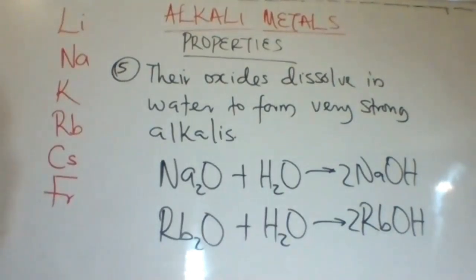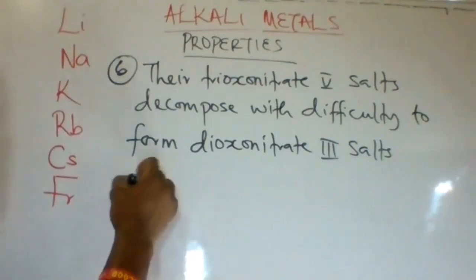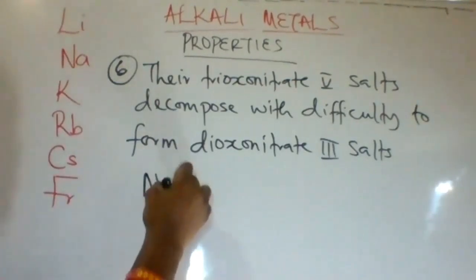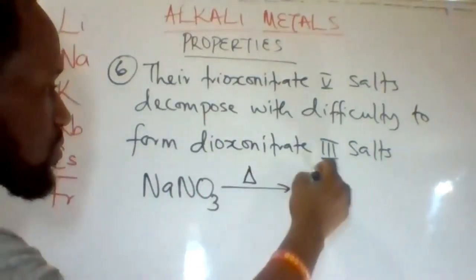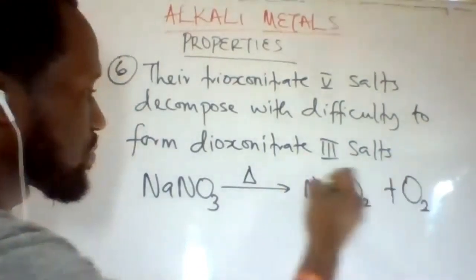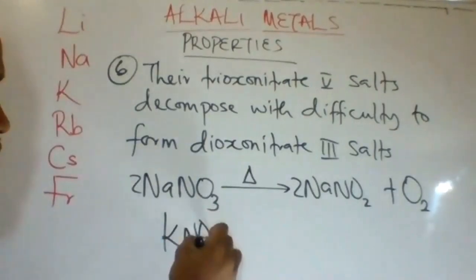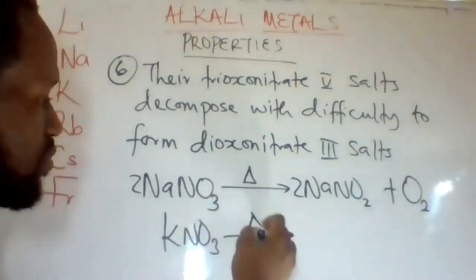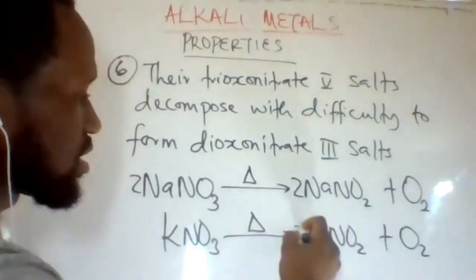These are very strong alkalis. Their trioxonitrate(V) salts decompose with difficulty to form dioxonitrate(III) salts. For example, sodium nitrate, when heated, forms sodium nitrite and oxygen gas. Also, potassium nitrate, when decomposed, forms potassium nitrite and oxygen gas.